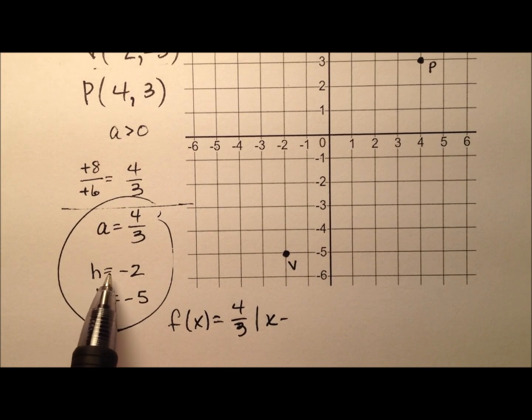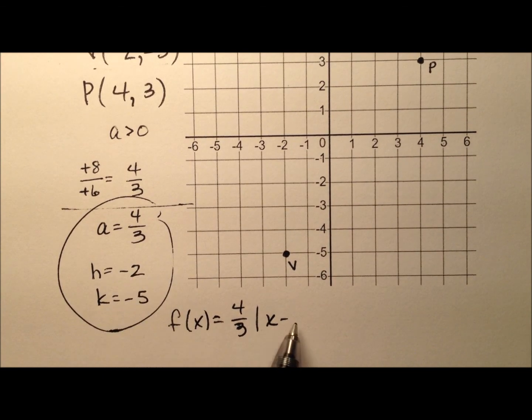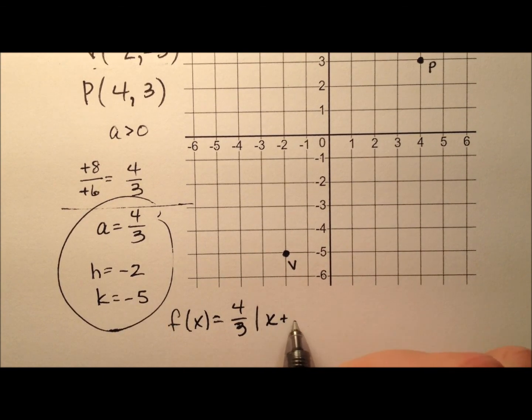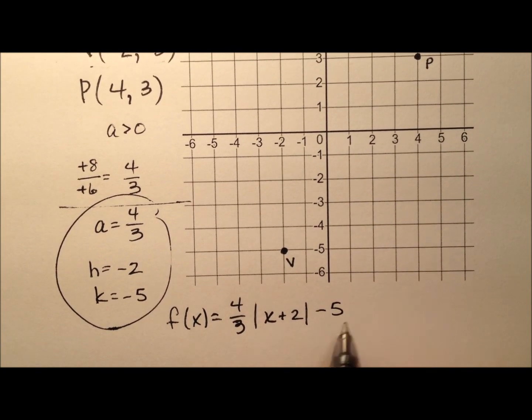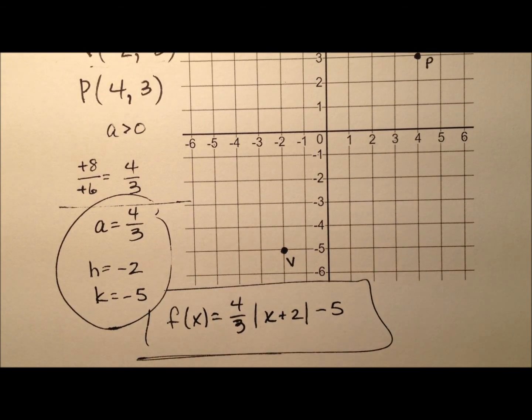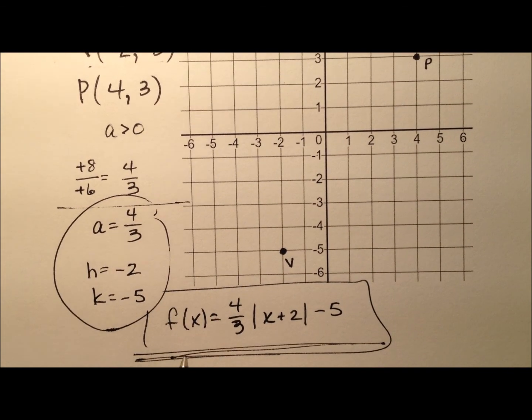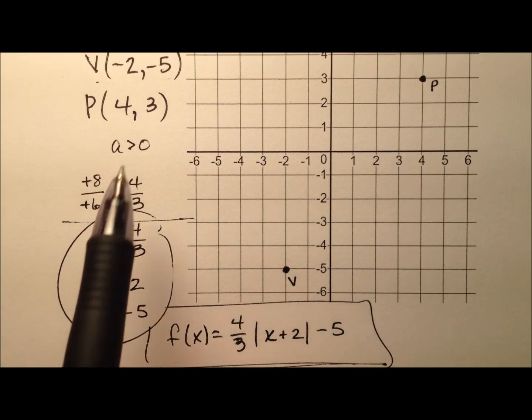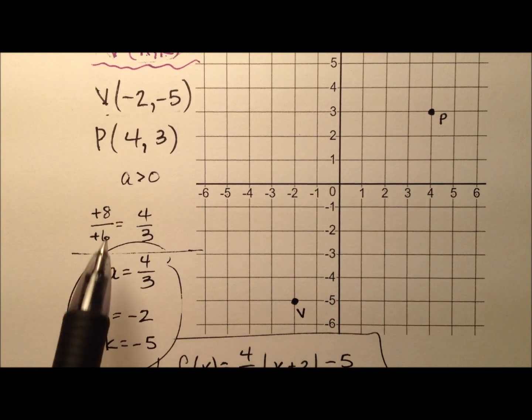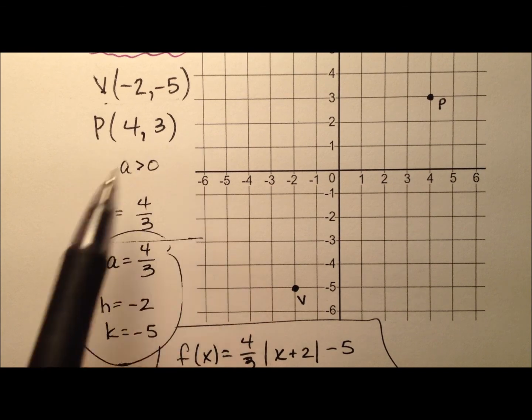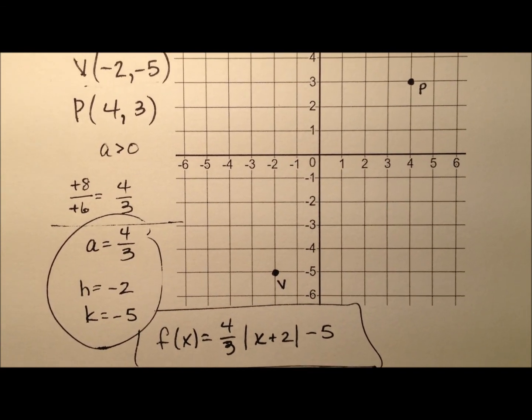You'll see though that h is -2, so subtracting a negative will end up being a positive, and then plus k, which is -5, so we'll say minus 5 on the end there. And right here is our function f(x) = 4/3|x + 2| - 5 for the absolute value whose vertex is (-2, -5), and one of the legs passes through (4, 3).